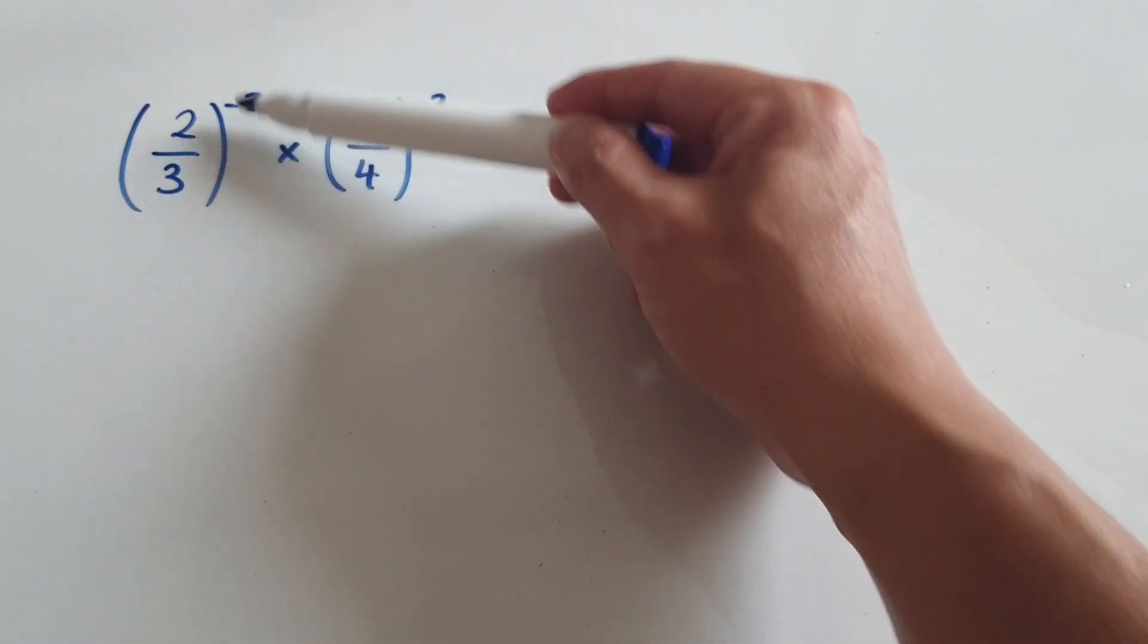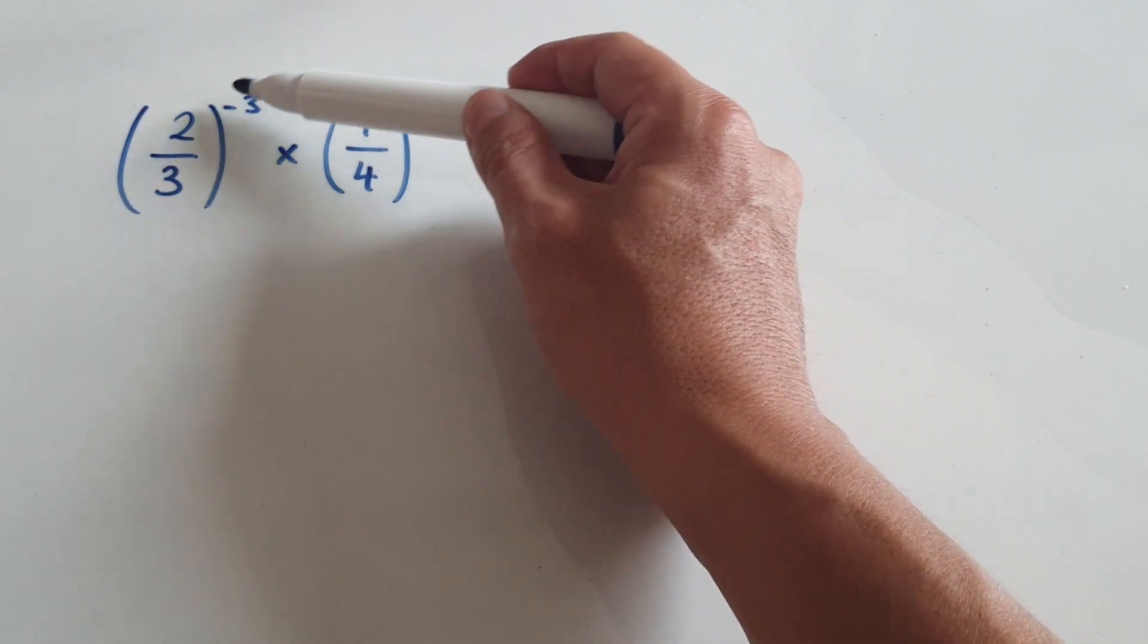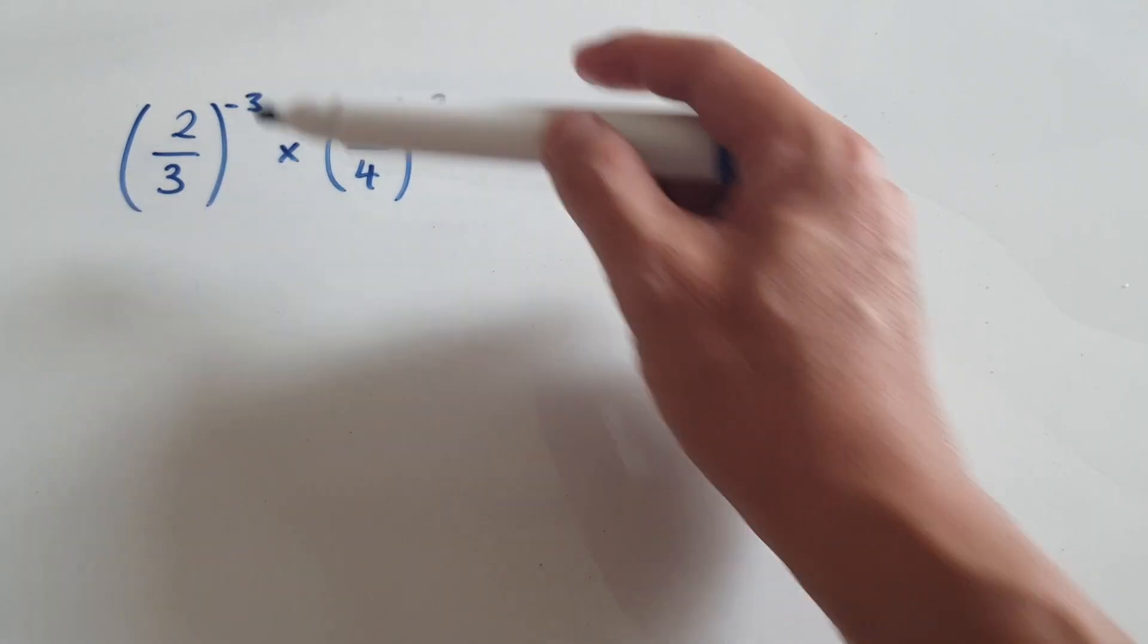Okay, let's try and evaluate this. Here you've got one block times another block. Anytime you see to the power of a negative, extract the negative 1.